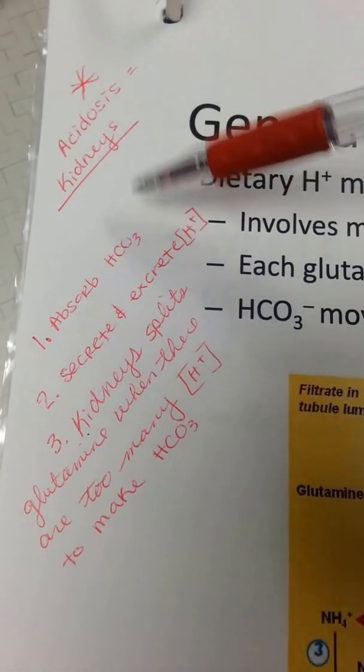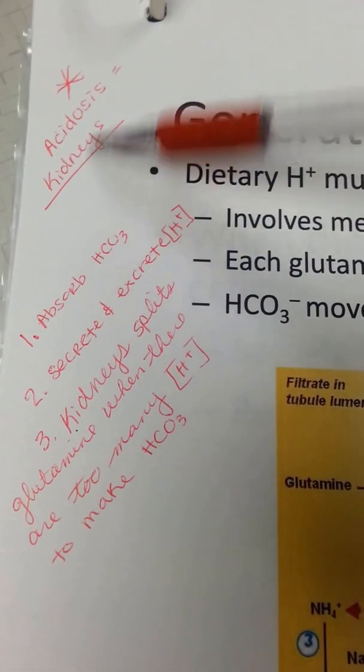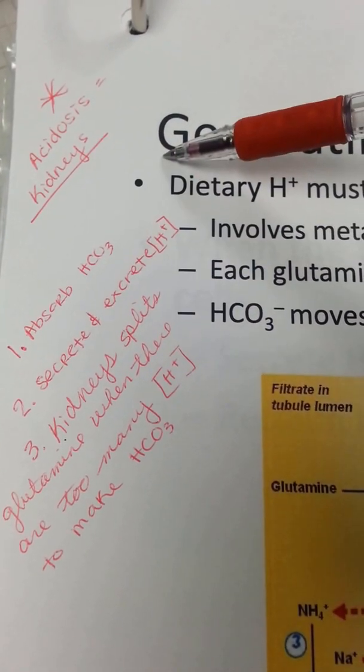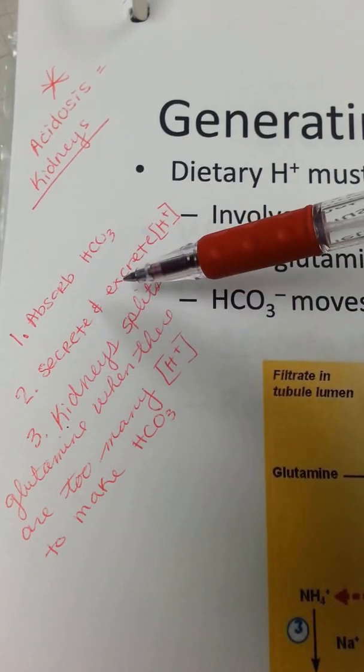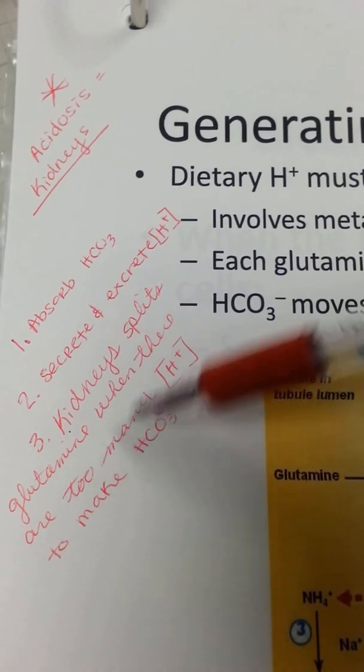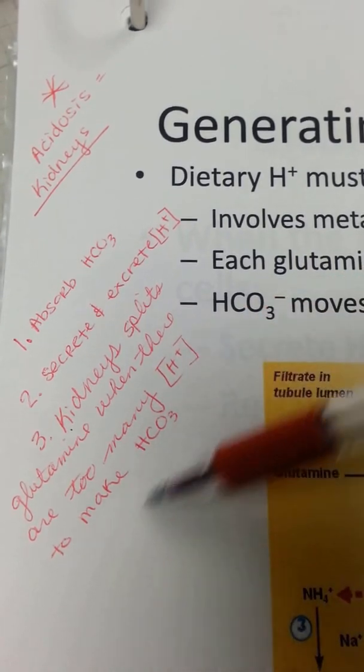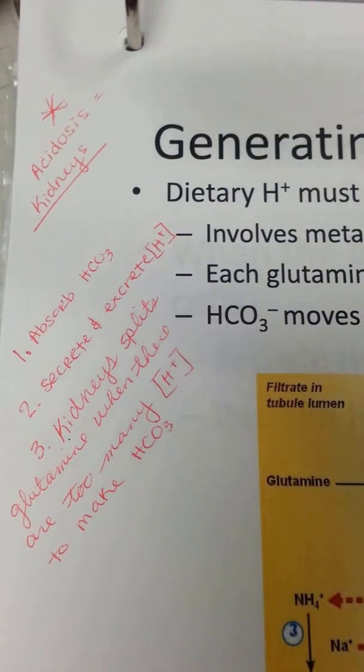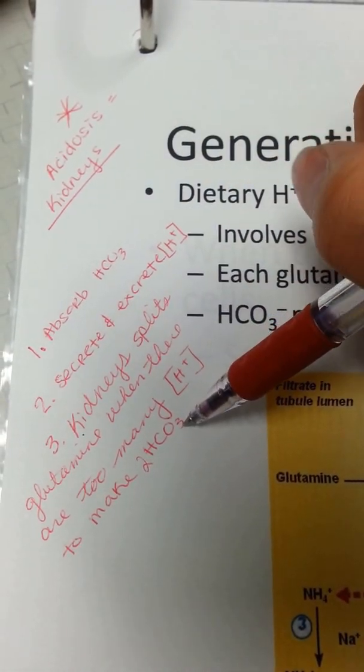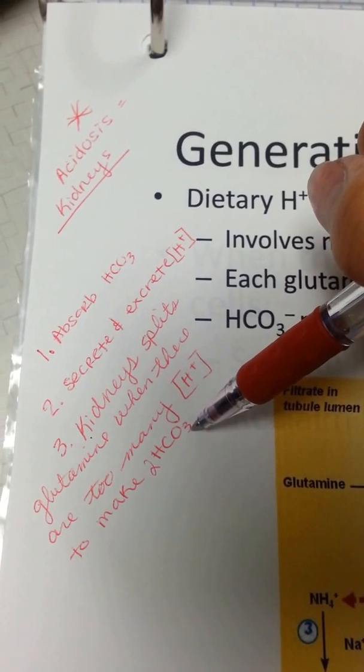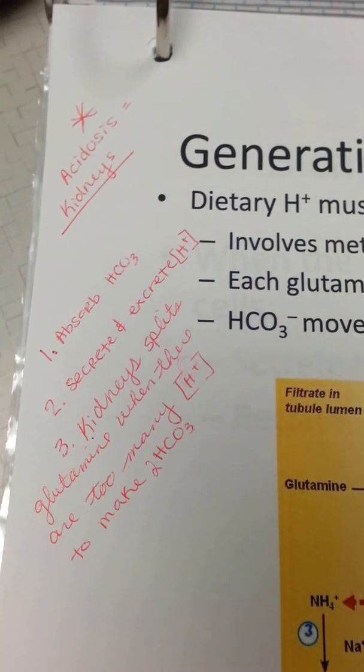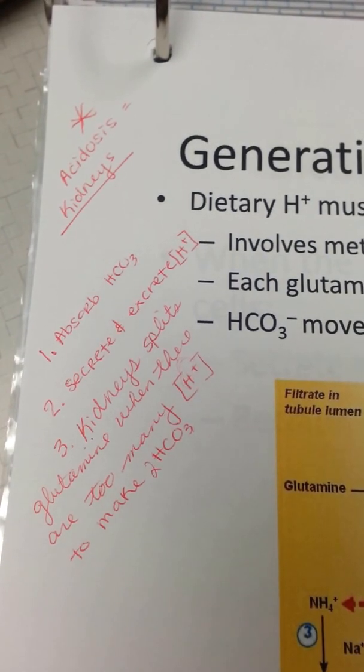Remember, acidosis equals the kidneys. They absorb bicarbonate so it can attach to hydrogen, or they secrete and excrete hydrogen. The kidney splits glutamine when there are too many hydrogen to make two bicarbonate. Those two bicarbonate are going to find the hydrogen, so that's how you secrete and excrete hydrogen.